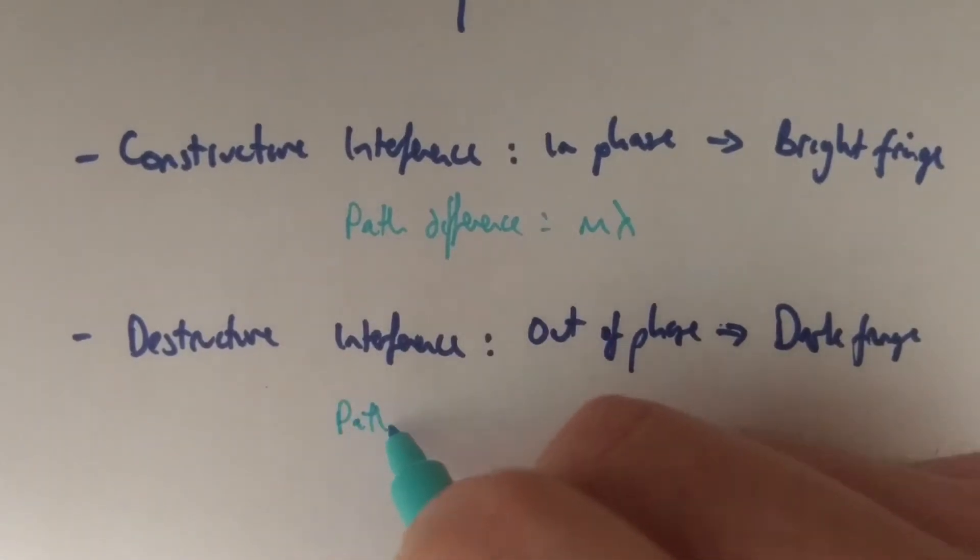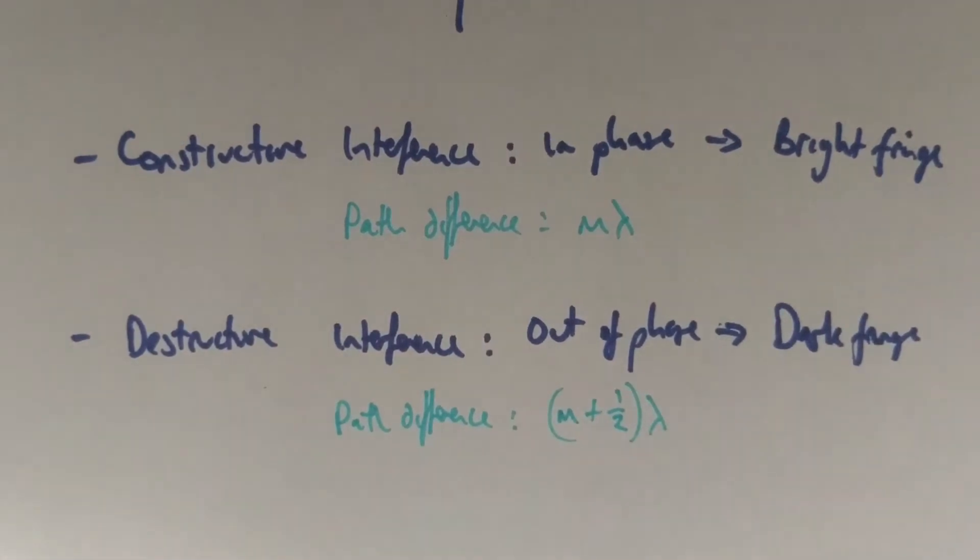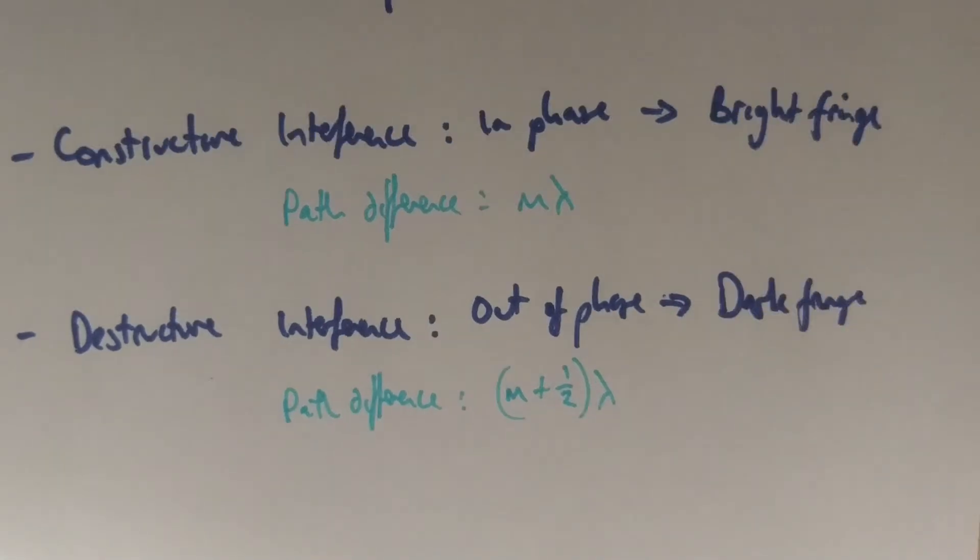This happens when the path difference is half a wavelength out, or a multiple of half a wavelength out. The way we normally express it is M plus a half times lambda. So if it's half a wavelength, 3 over 2 wavelengths, 5 over 2 wavelengths, and so on.